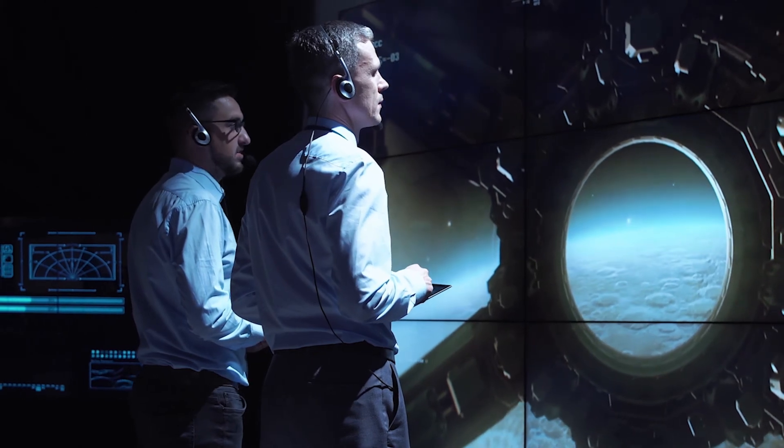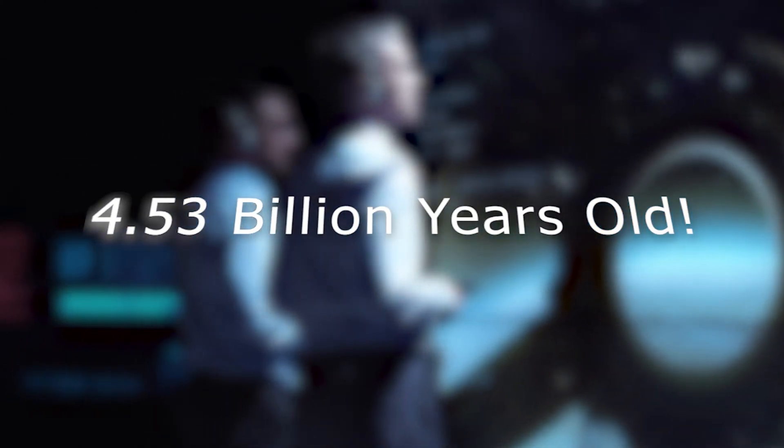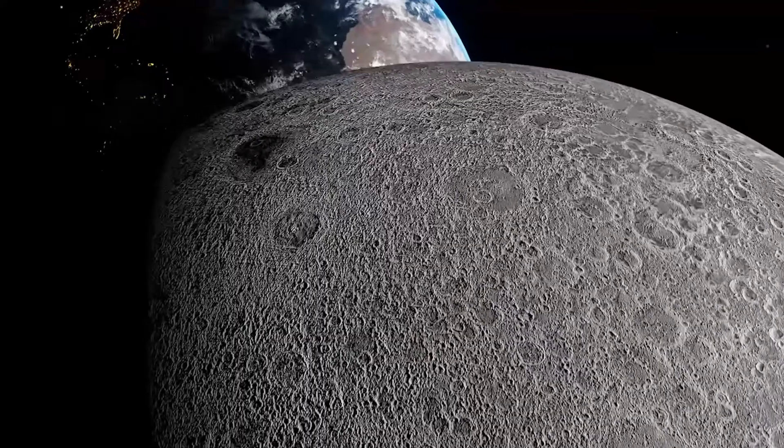Scientists estimate that our Moon is approximately 4.53 billion years old. This means that it came into being only 60 million years after the solar system itself. So what is keeping the Moon from falling down on Earth since billions of years?